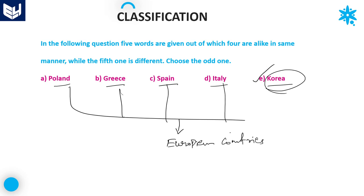That is the reason why the answer is Option E — Korea is the odd one among all the five options. It is not following the similar logic as that of the remaining four. Poland, Greece, Spain, and Italy are all European countries, but Korea is not a European country. I hope you enjoyed the session. Thank you very much for watching.